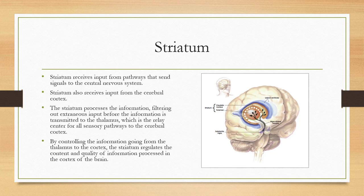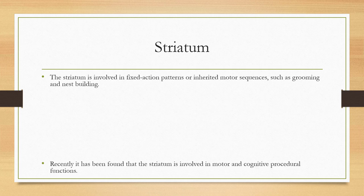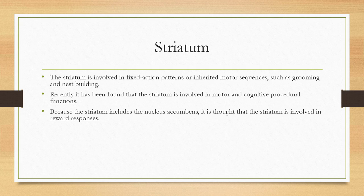By controlling information going from the thalamus to the cortex, the striatum regulates the content and quality of information processed in the cortex. The striatum is also involved in fixed action patterns or inherited motor sequences such as grooming and nest building, as well as motor and cognitive procedural functions. Because the striatum includes the nucleus accumbens, it is also thought to be involved in reward responses.